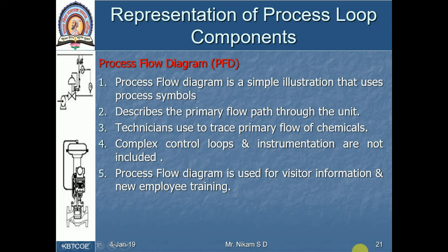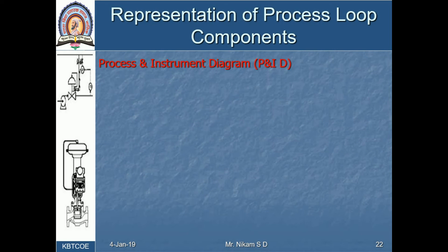The process flow diagram is used for visitor information and new employee training. For example, if you visit a thermal plant, they will not initially explain how temperature is controlled in the boiler. They will simply explain: coal is crushed and converted to powdered form, thrown into a boiler where it burns, water gets heated, steam is generated, and that steam is given to a turbine to produce power. This simple explanation is the process flow diagram.